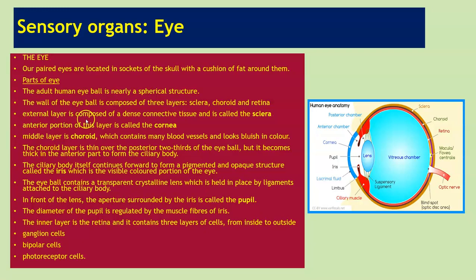The external layer is composed of a dense connective tissue and is called the sclera. The anterior portion of this layer is called the cornea. The middle layer is the choroid, which contains many blood vessels and looks bluish in colour.